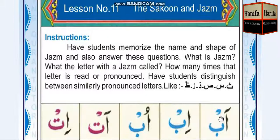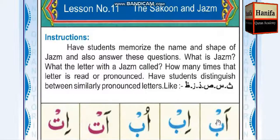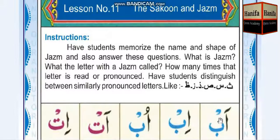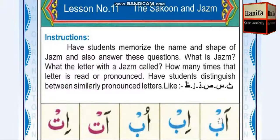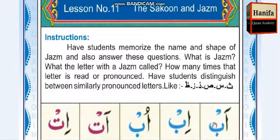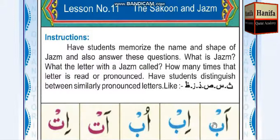Haraka means Fathah, Dhamma, or Kasra. When the suqoon sign comes on a letter, as you can see in this example, the jazam sign is on the letter Ba. We basically connect that letter with the previous letter. So Hamza connects with Ba: Hamza, Ba, Fathah — Ab. We are connecting. This is the meaning of the jazam sign.